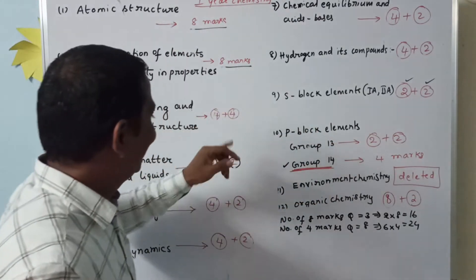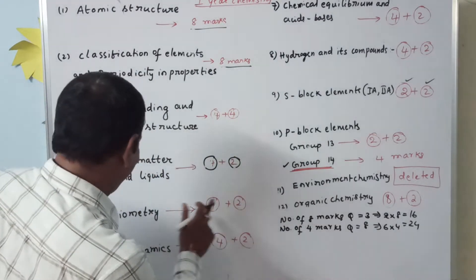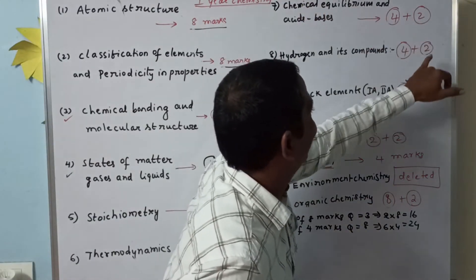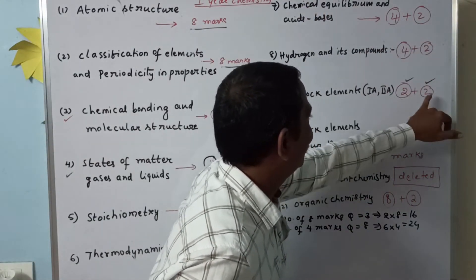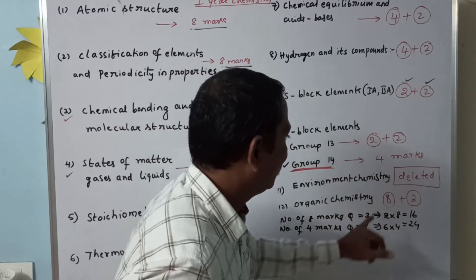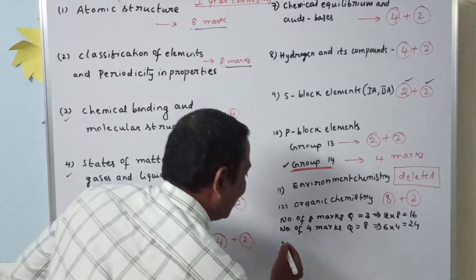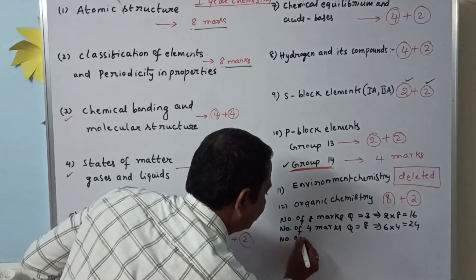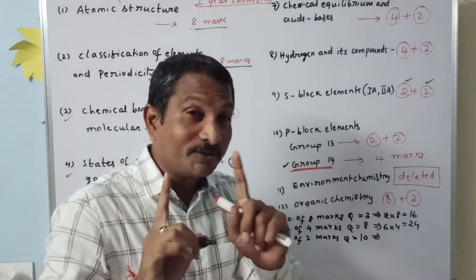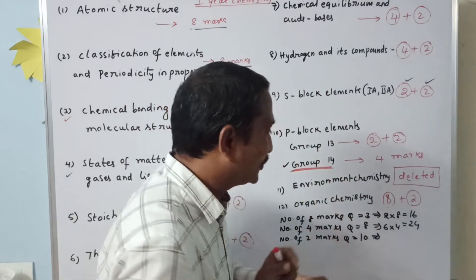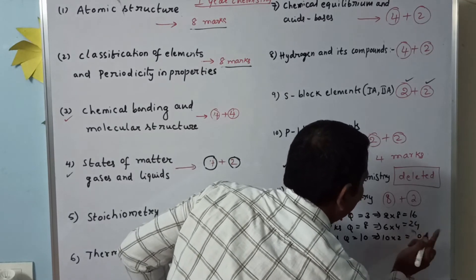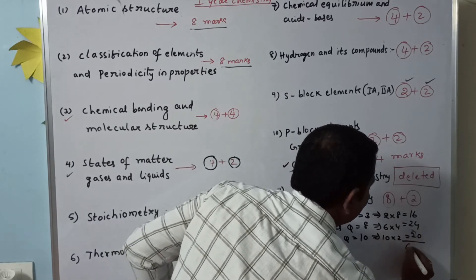There are ten two-mark questions: one from states of matter, one from stoichiometry, one from thermodynamics, one from chemical equilibrium, one from hydrogen compounds, two from S-block elements, two from Group 13 of P-block, and one from organic. For two-mark questions, there is no choice — we should write all ten questions. Ten twos are twenty. Total marks: sixty.